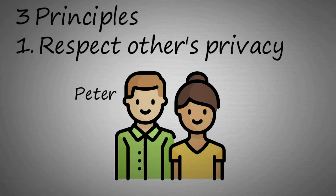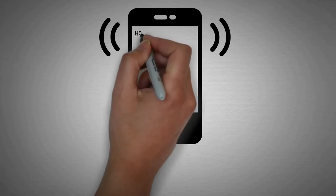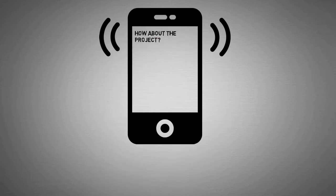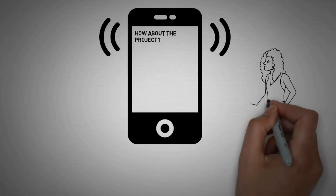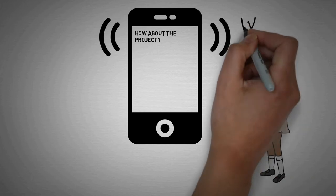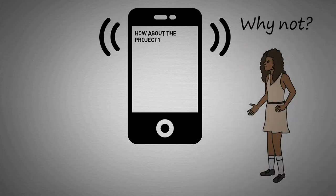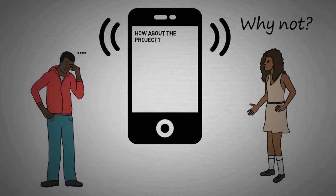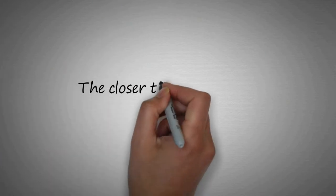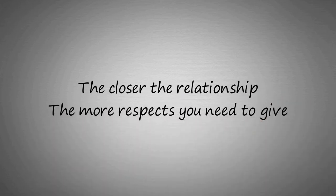For example, Peter and Mary are a couple. One day, Peter was in the toilet and left his phone on the desk. Suddenly, Peter's phone got messages. Mary thought that she could read the message without any permission since they are a couple. Although the message was very general, Peter was a bit displeased by her behavior. Just remember, the closer the relationship, the more respect you need to give.